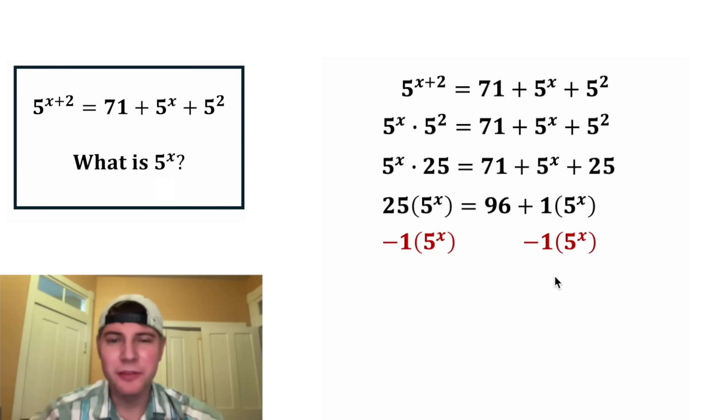Next, let's subtract this 1 5 to the power of x from both sides of the equation. 25 5 to the power of x minus 1 5 to the power of x is 24 5 to the power of x, and that'll be equal to 96. Now to get this 5 to the power of x all by itself, we can divide both sides by 24. On the left-hand side, these cancel each other out, so we're left with 5 to the power of x. And on the right-hand side, 96 divided by 24 is 4.